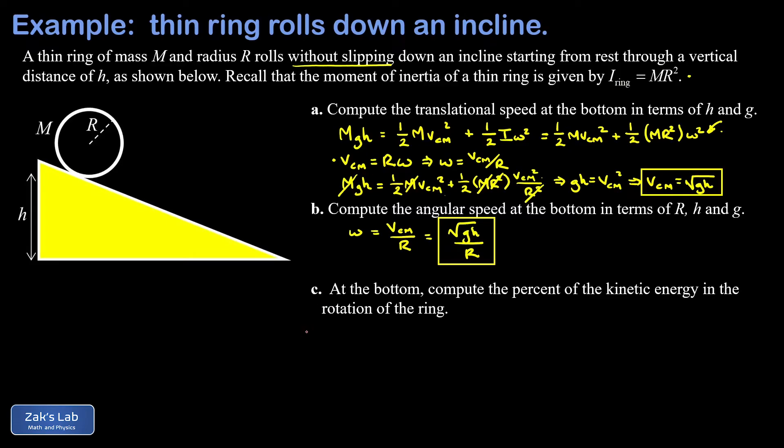Finally in part c we're asked to compute the percentage of the kinetic energy in the rotation of the ring. If I go back to my expression for the total kinetic energy of the rolling ring, this first term one half m v center of mass squared is the translational kinetic energy. The second term one half I omega squared is the rotational kinetic energy.